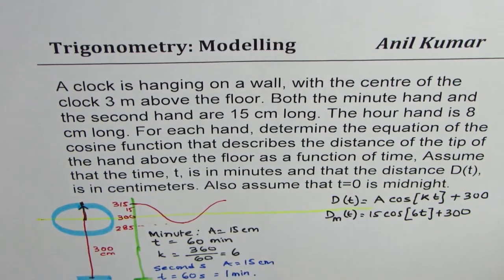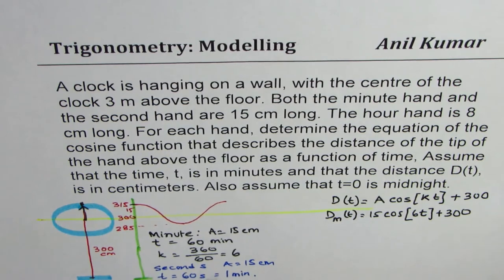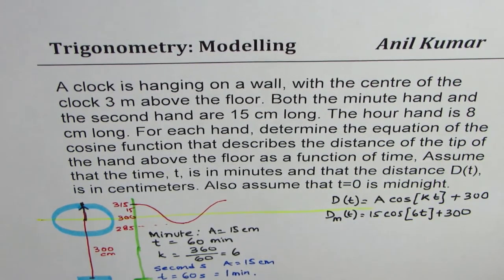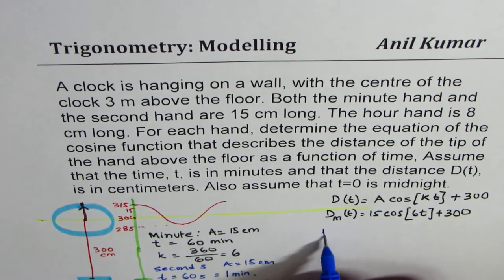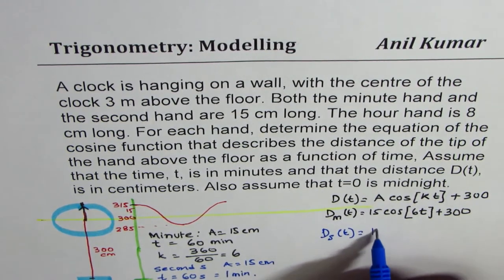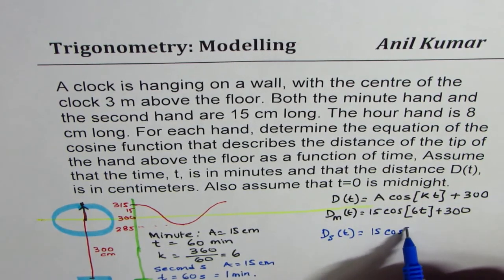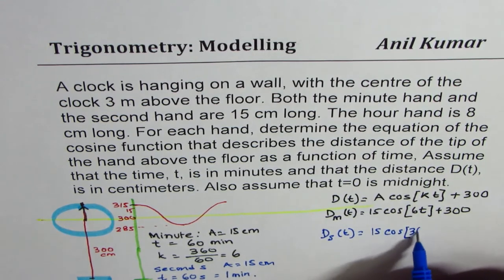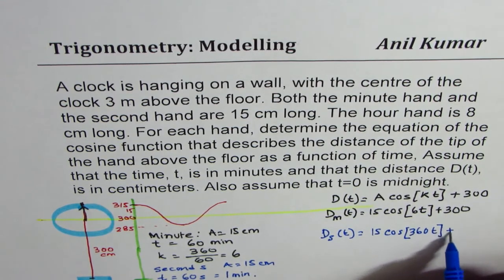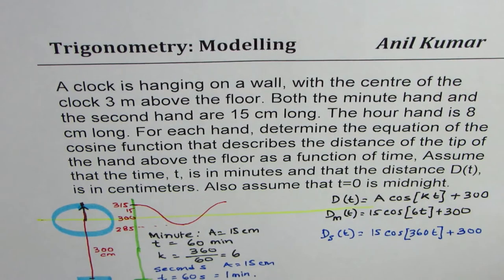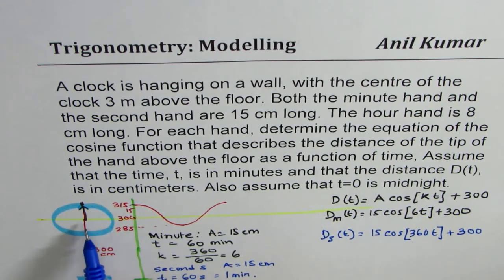So in this case, k value will be equal to what? k will be 360 by 60 since we are doing time in minutes. I mean, sorry, 360 by one minute, which is 360. So the equation for the seconds hand will be same amplitude. However, it goes much faster. So it will be 360t plus 300. Since it makes one full circle in one minute.